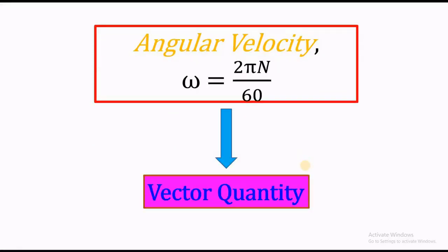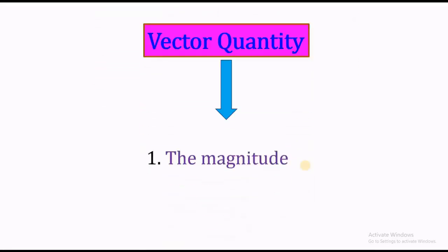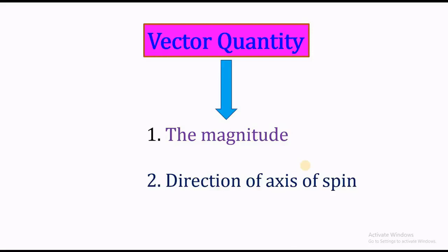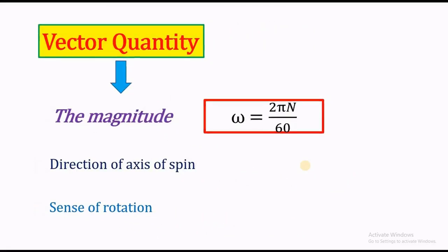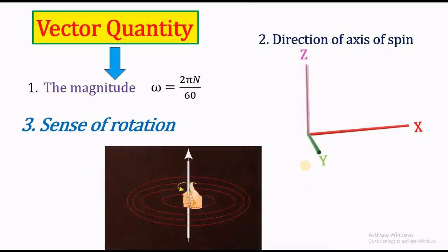Omega is a vector quantity. A vector quantity is specified with the following information: number one, the magnitude; the direction of axis of spin; and the sense of rotation. The magnitude is given by the expression omega equals 2πn by 60. The direction of axis of spin is x, y, z coordinates of a 3-dimensional coordinate system, and sense of rotation is given by clockwise or counterclockwise.